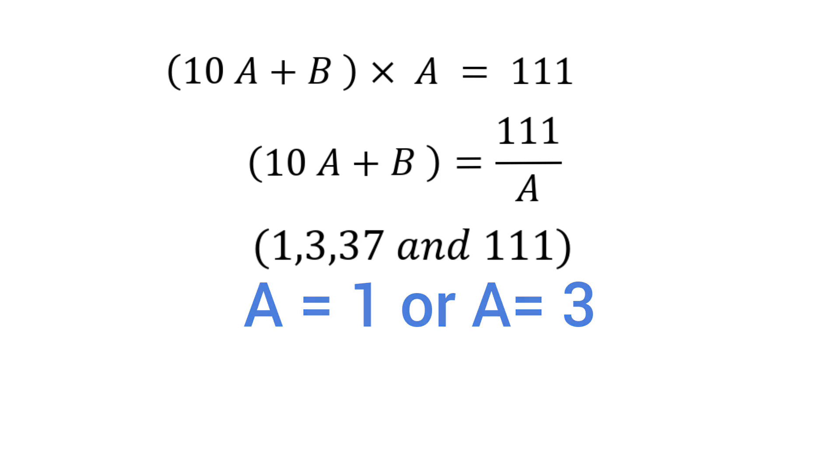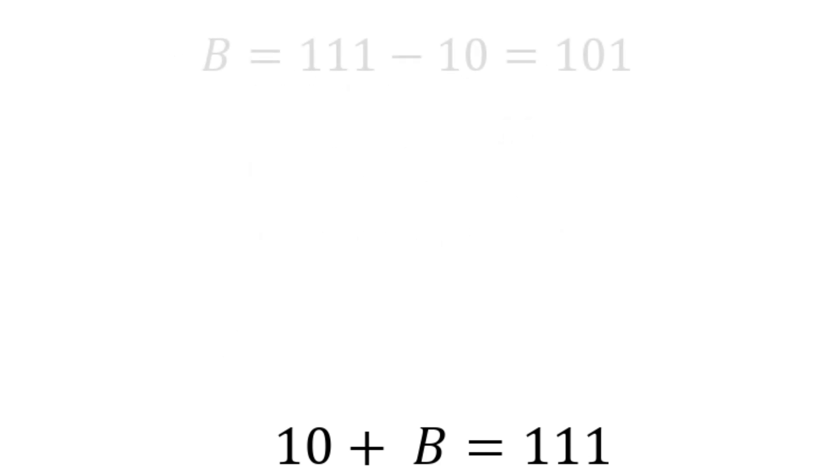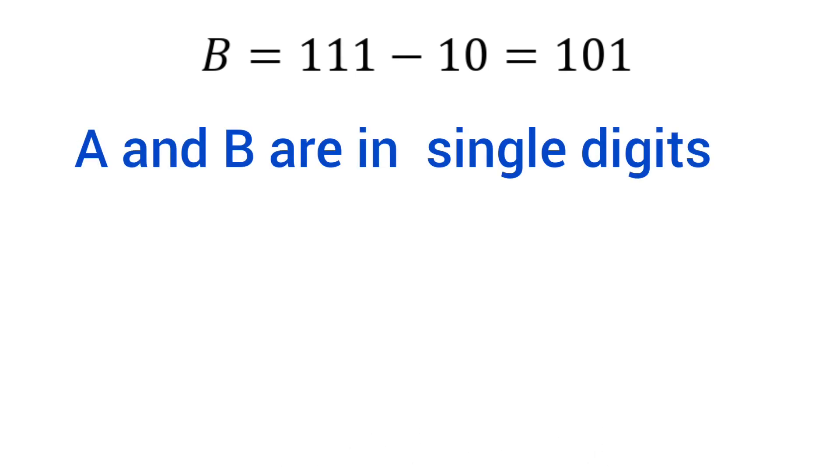Let's first take A equals 1. If we put A equals 1, then we have 10 into 1 plus B equals 111 by 1. Then 10 plus B equals 111, so B equals 111 minus 10, which equals 101. But it is given that A and B are single digits, so A must not be equal to 1.